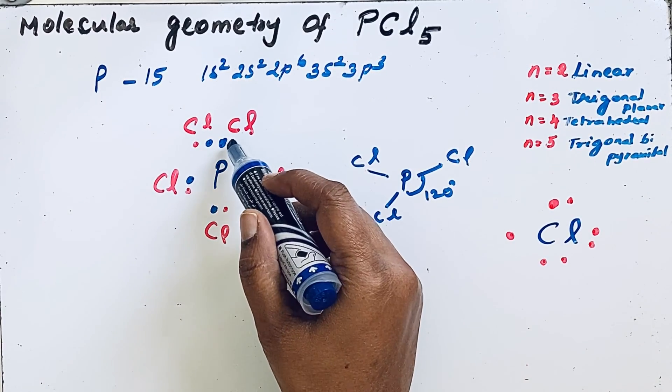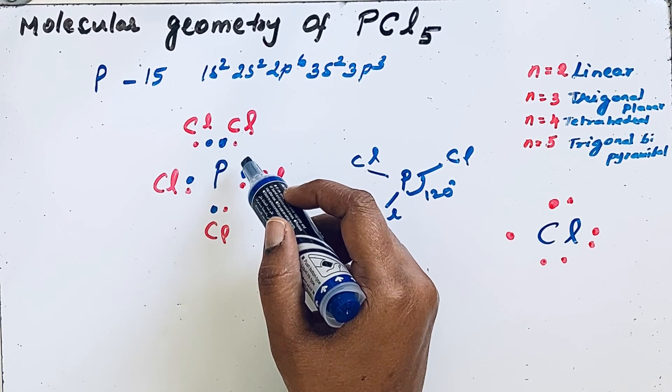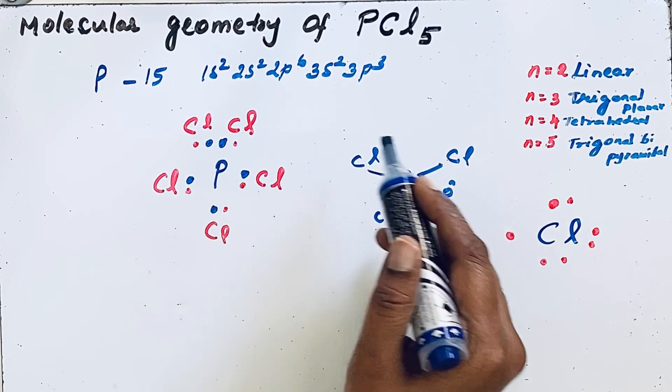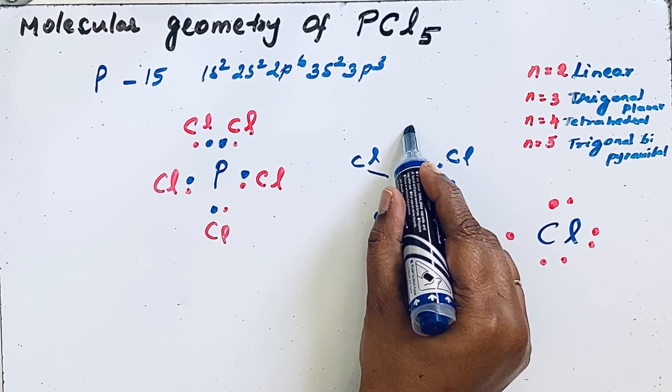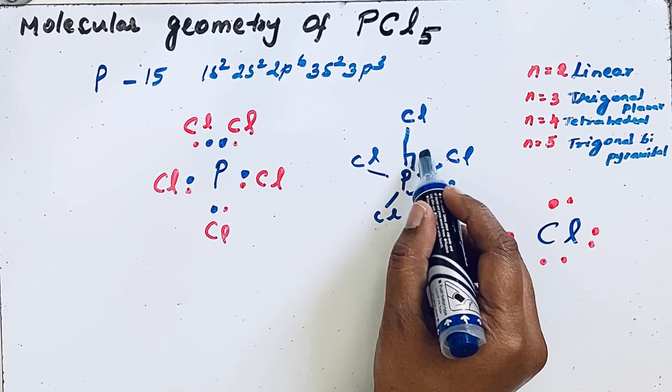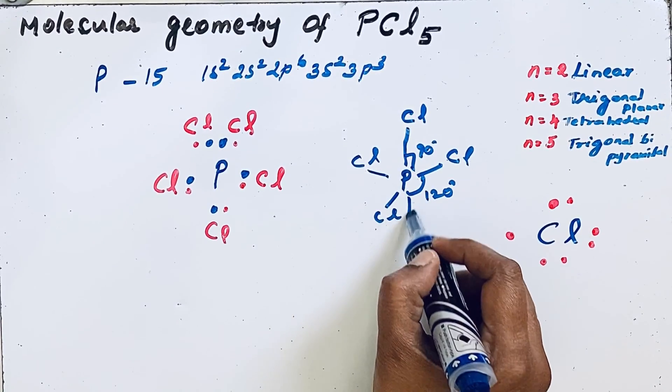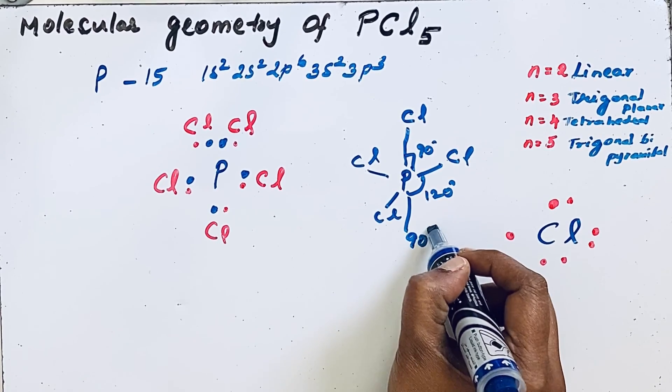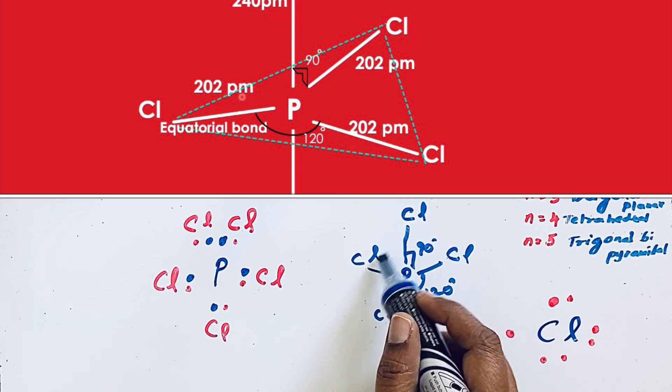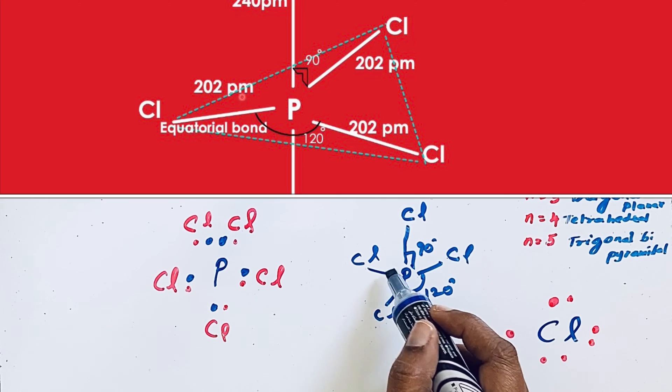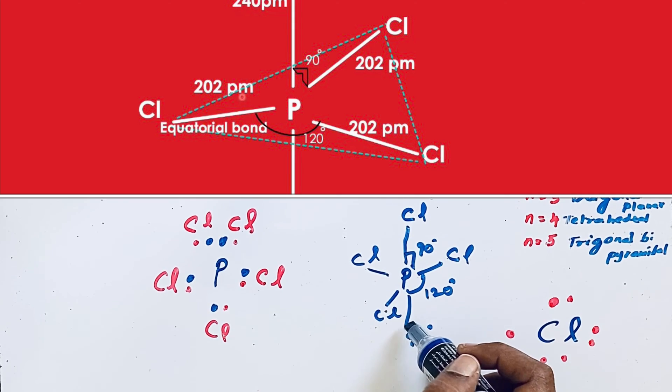We have two more bond pair electrons which take the axial position and form axial bonds with a bond angle of 90 degrees. If you connect all the bonds, you will get the trigonal bipyramidal structure.